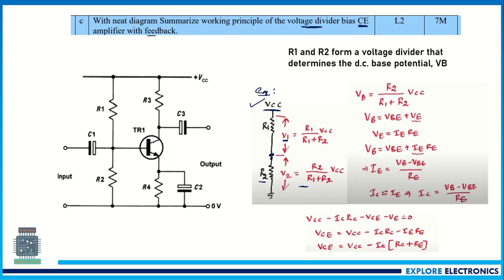Then explain the common emitter configuration. Since it is an NPN transistor, we bias it so that a minimum VBE is provided to turn the transistor on. Explain the functionality of R1 and R2 in fixing VB, write the expression for VB, then the expressions for IE and IC. Finally, derive VCE — the voltage at the collector terminal — considering all contributing parameters. This carries seven marks.